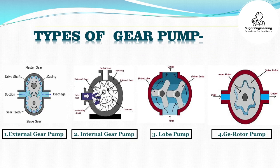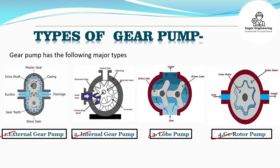Now let's discuss the types of gear pumps. Generally there are four types: number 1, external gear pumps; number 2, internal gear pumps; number 3, lobe pumps; and number 4, G-rotor pumps. We will discuss all four types in this video.